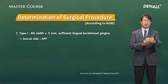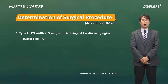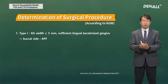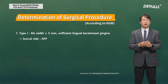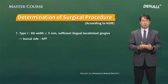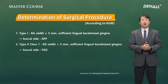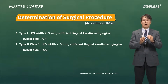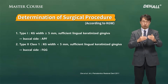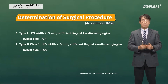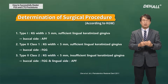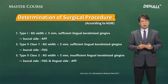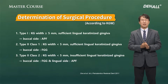The width of keratinized tissue is one of the key criteria. Generally, if the keratinized tissue width is 5 mm or more and sufficient lingual keratinized gingiva exists, keratinized tissue can be increased by APF on the buccal side. If the keratinized gingiva width is less than 5 mm but lingual keratinized gingiva is sufficient, free gingiva graft is done on the buccal side. If lingual keratinized gingiva is insufficient, an apically positioned flap on the lingual side and free gingiva graft on the buccal side are performed — though making an apically positioned flap on the lingual side is very difficult.